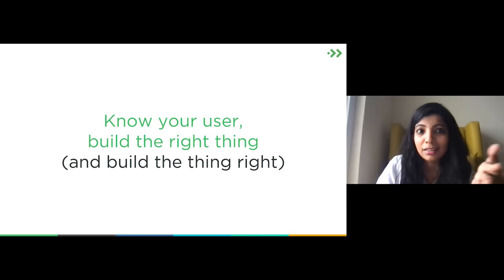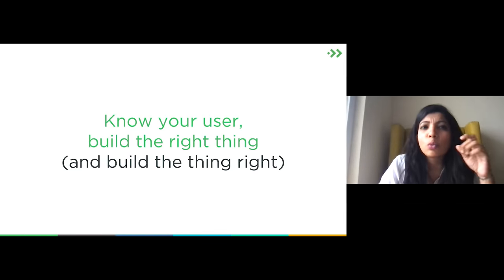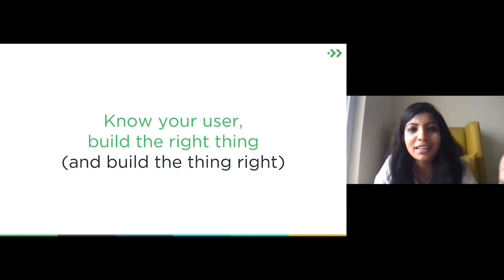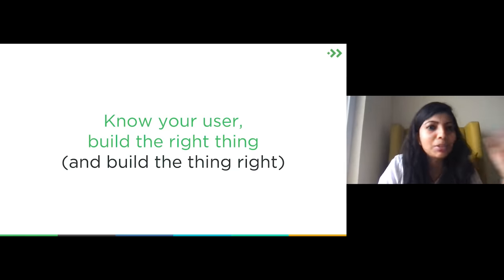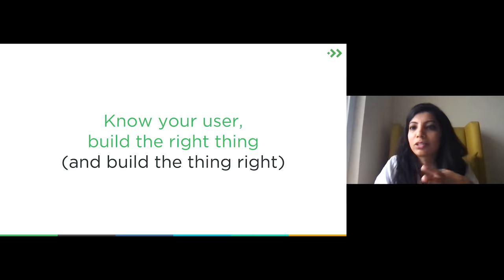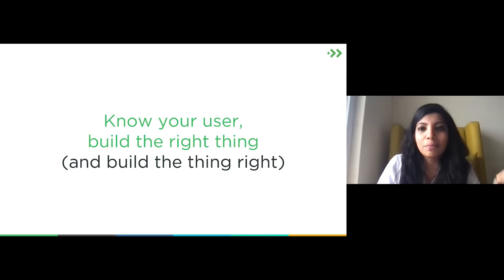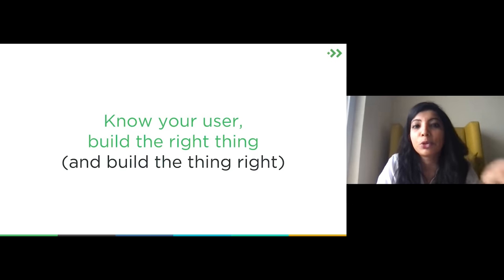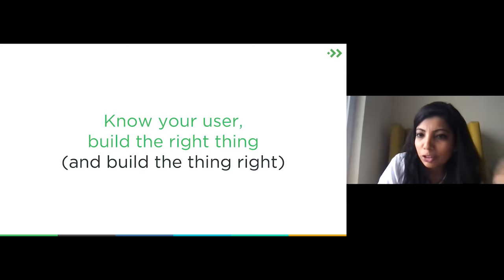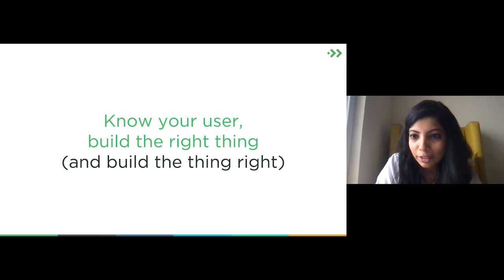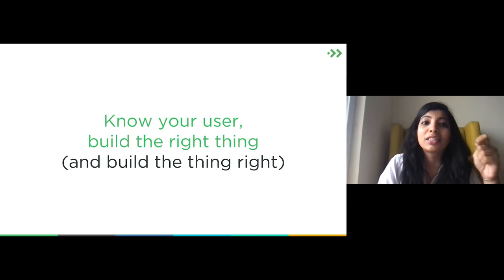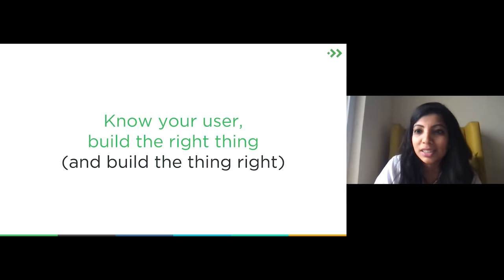Know your user to build the right thing, and then build the thing right. It's very easy to follow the trend, emulate competition, double down on what investors want or what your tech team wants to build — but in the short term and the long term there has to be no confusion. Customer obsession will help you win. In the world of product, this means working backwards from the problem into the solution, not starting with a solution in search of a problem.